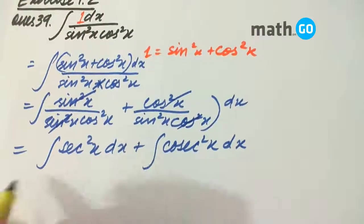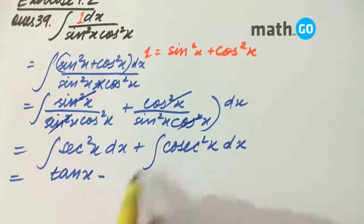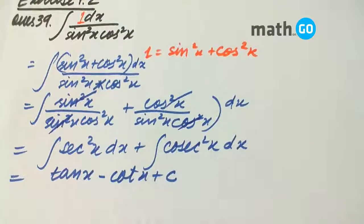So our final answer is simply, using formulae that says that this is equal to tan x and this equals to minus cot x plus constant is always there.